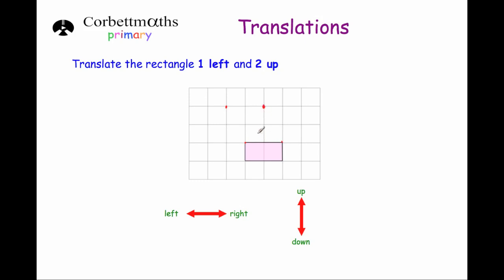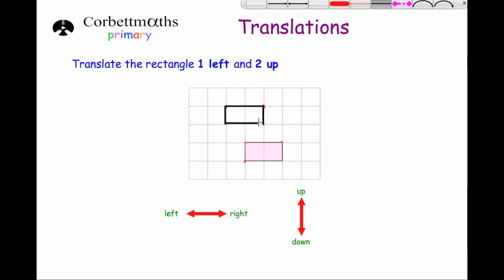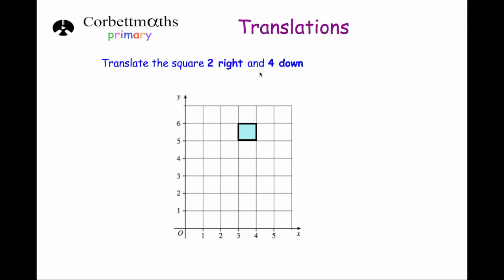I like doing all the points, so I'm going to move this one one square left and two squares up, and again this one one left and two up. There we've got our rectangle — we then get our ruler, join up the points, and that's the rectangle translated one to the left and two squares up.